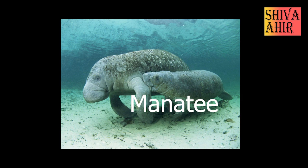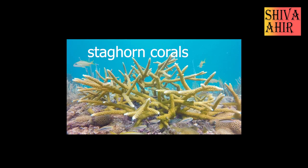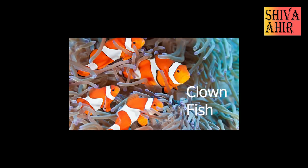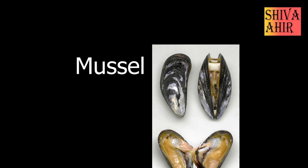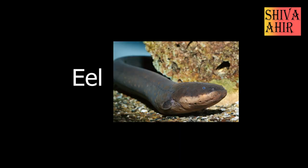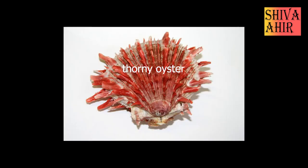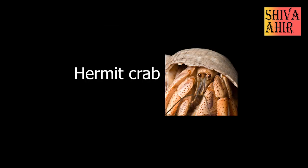Manatee. Staghorn Corals. Tube Sponge. Clown Fish. Mussel — Kalaw. Eel — Heel. Walrus. Thorny Oyster. Hermit Crab — Piranda.